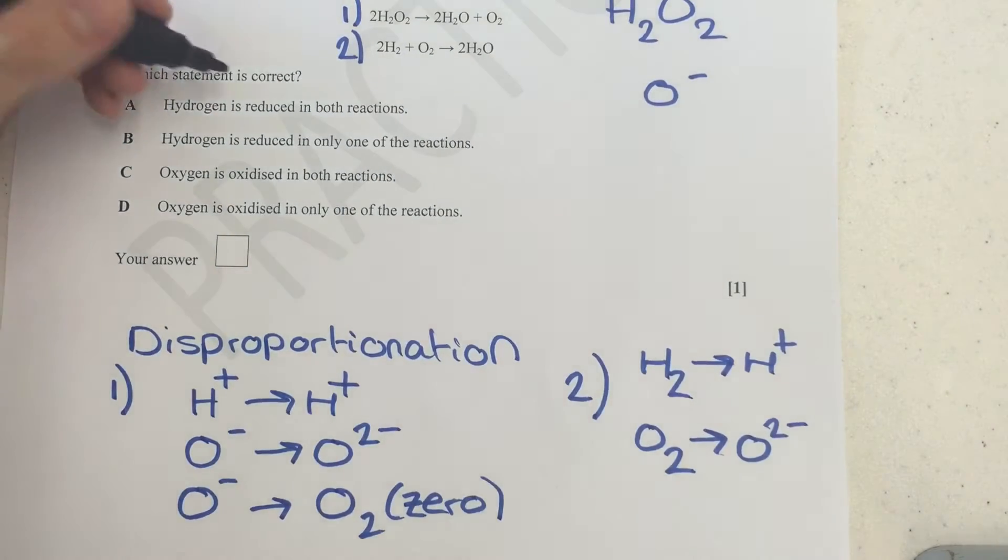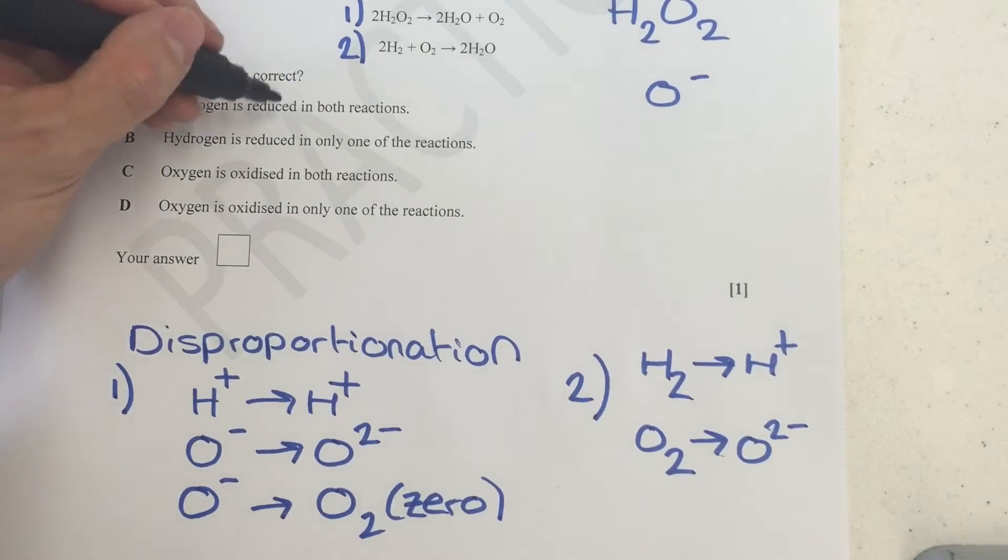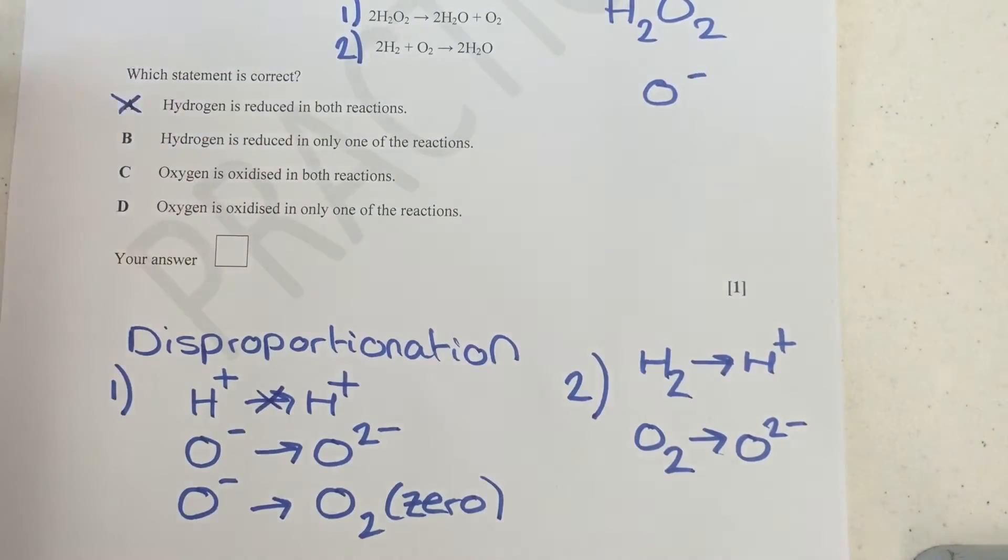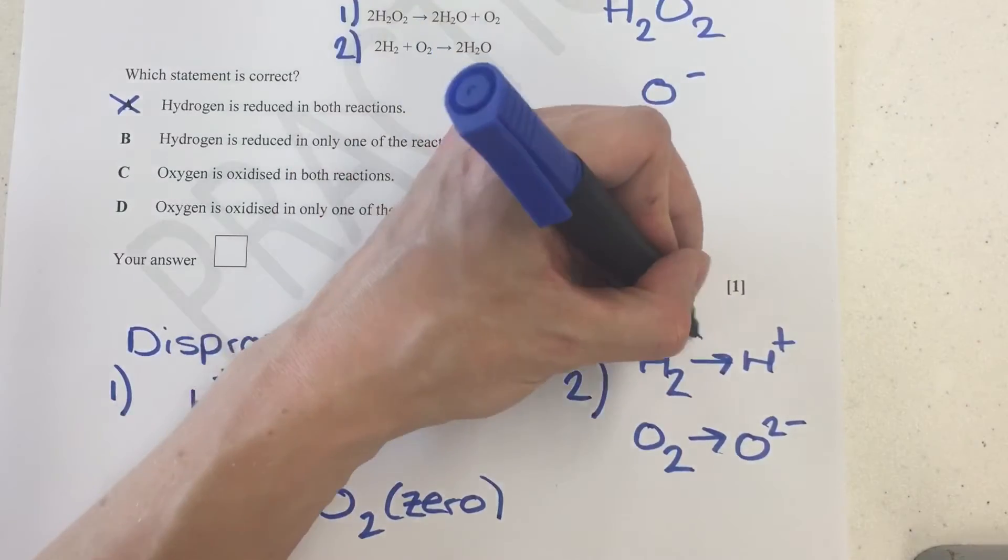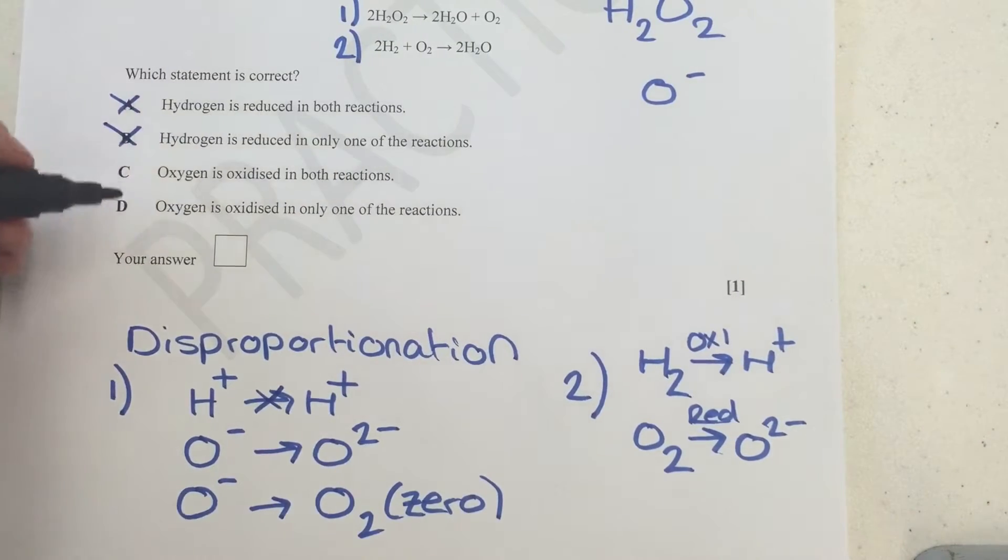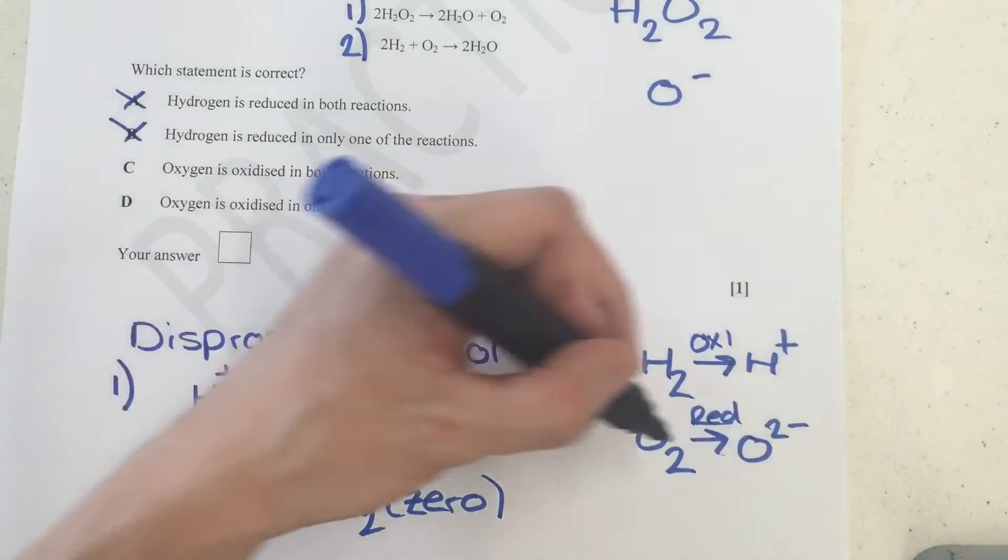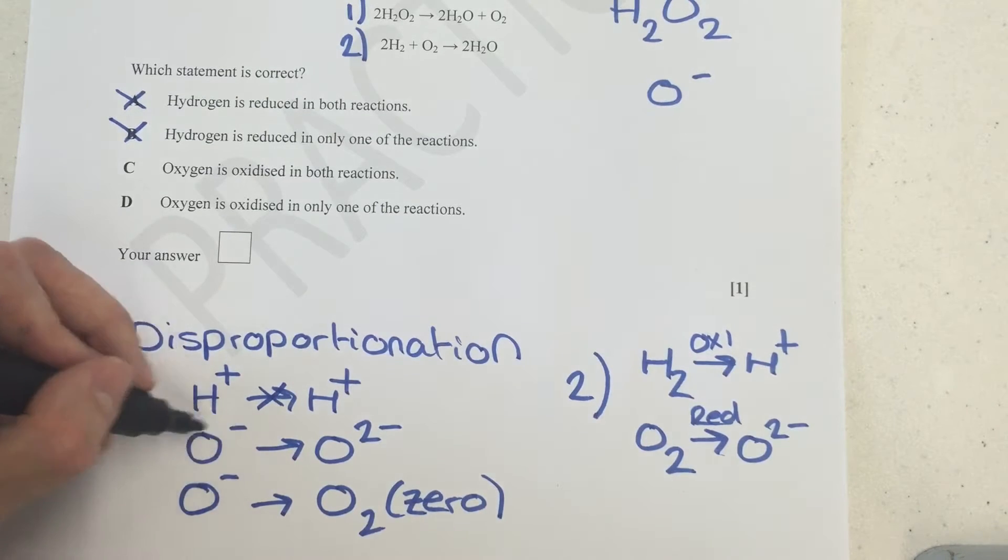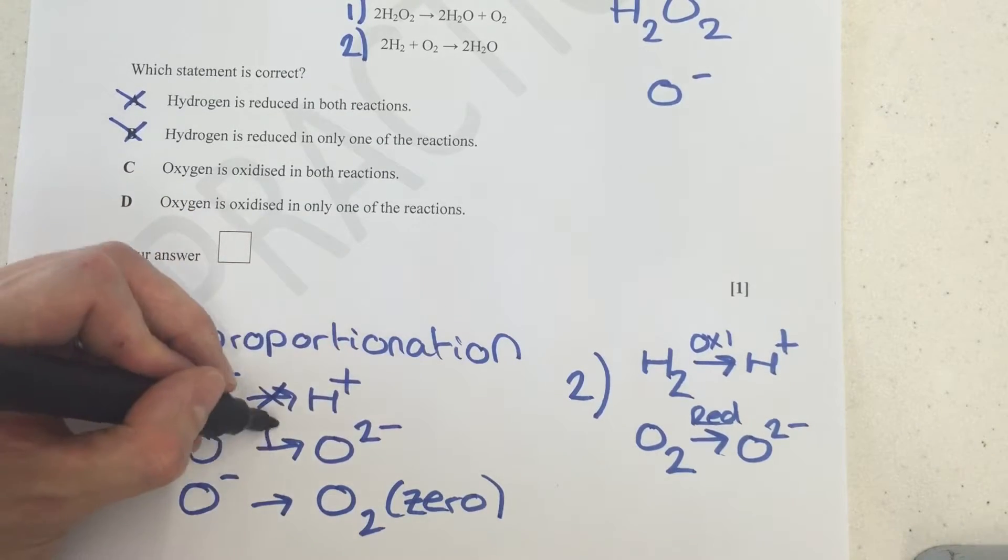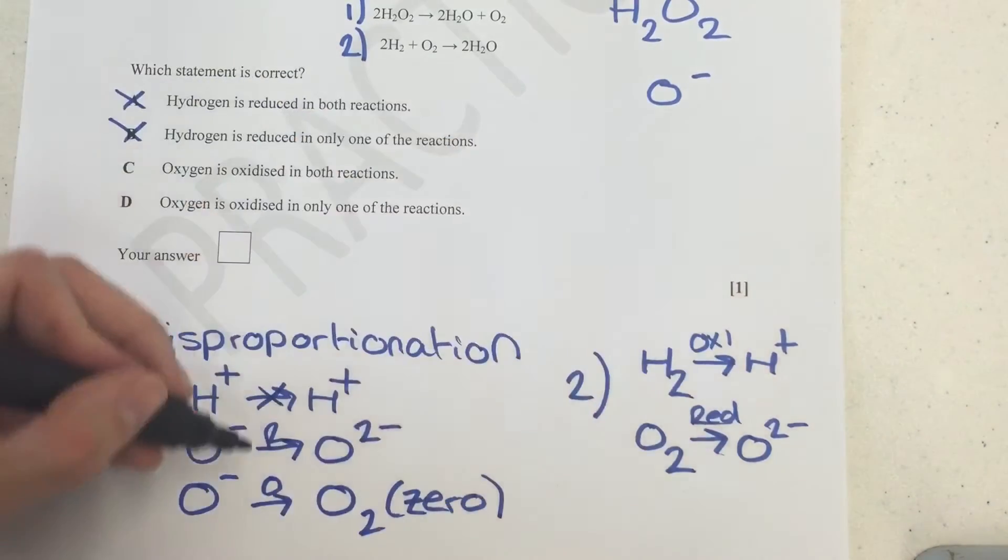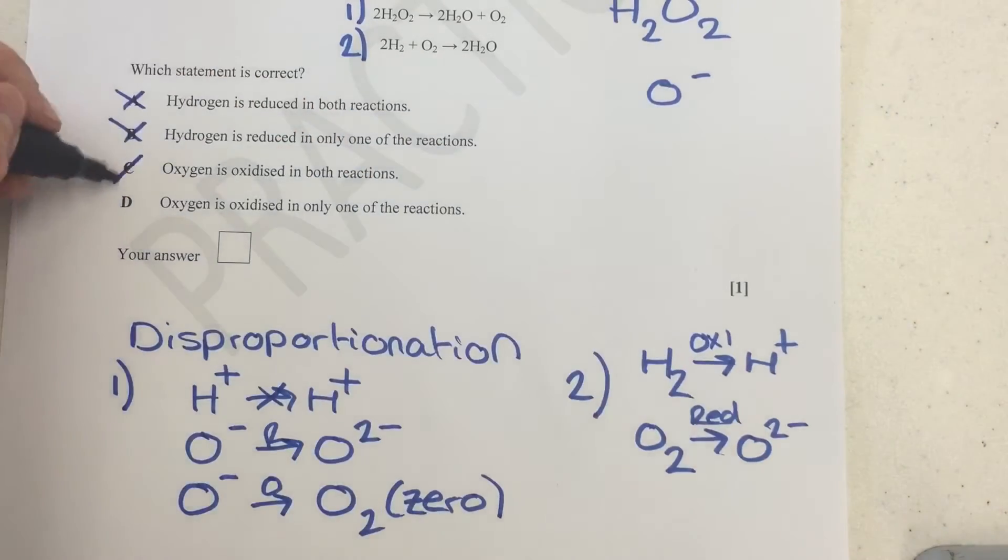If we're looking at these statements then, we've been asked here, hydrogen is reduced in both reactions. We can see here nothing actually happens with the hydrogen, so that can't be true. Hydrogen is reduced in only one of the reactions. Well actually over here, the hydrogen when it does react is actually oxidized, and it was the oxygen here that was reduced. Oxygen is oxidized in both reactions. Well actually in this one over here, although it does get oxidized on this side, so oxidation is a loss of electrons, we can see if we have O- here and we go to two minus, that would be a reduction, and this one here would be an oxidation.